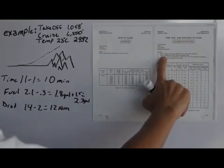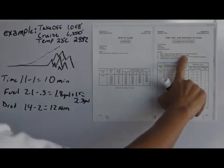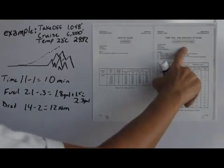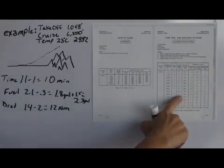Next, it says that my mixture should be leaned above 3,000 in order to maintain my maximum RPMs to achieve the performance specified in this chart.